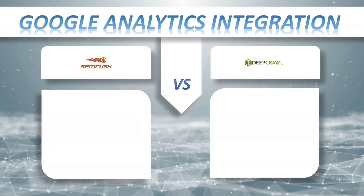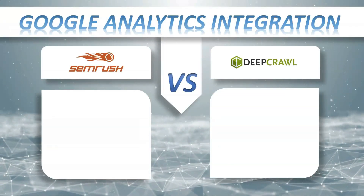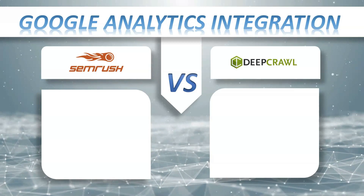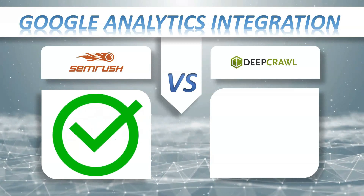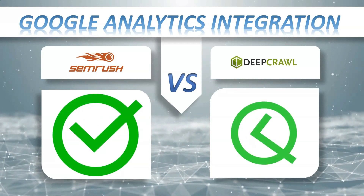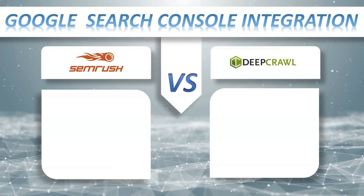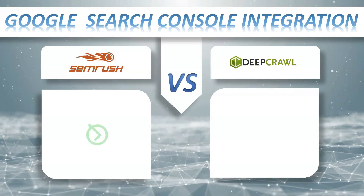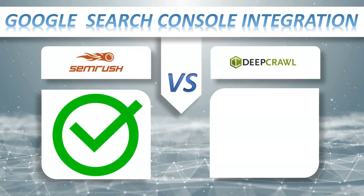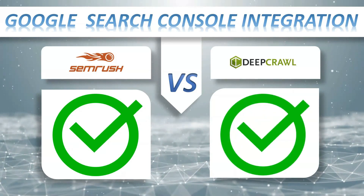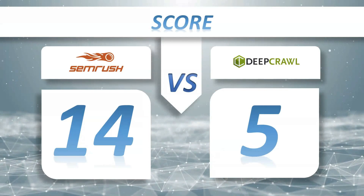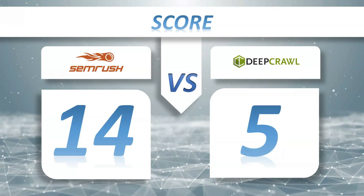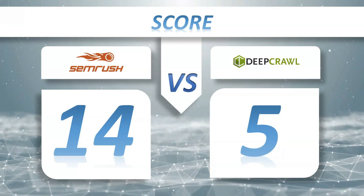Google Analytics integration: SEMrush plus, DeepCrawl plus. Google Search Console integration: SEMrush has it, DeepCrawl has it. So let's see the score: SEMrush 14, DeepCrawl 5.